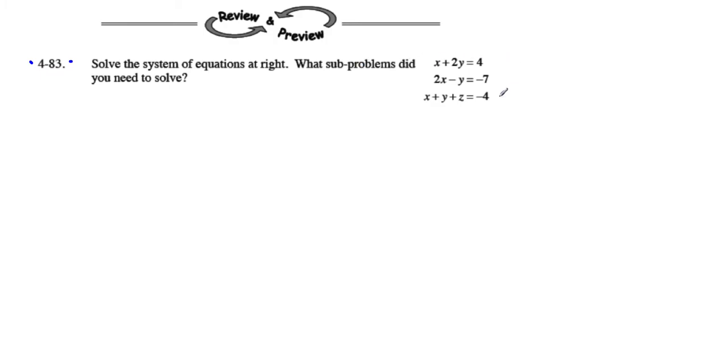We have a system of equations here, and you can see that we have three equations in this system. x plus 2y equals 4, 2x minus y equals negative 7, and then x plus y plus z equals negative 4.